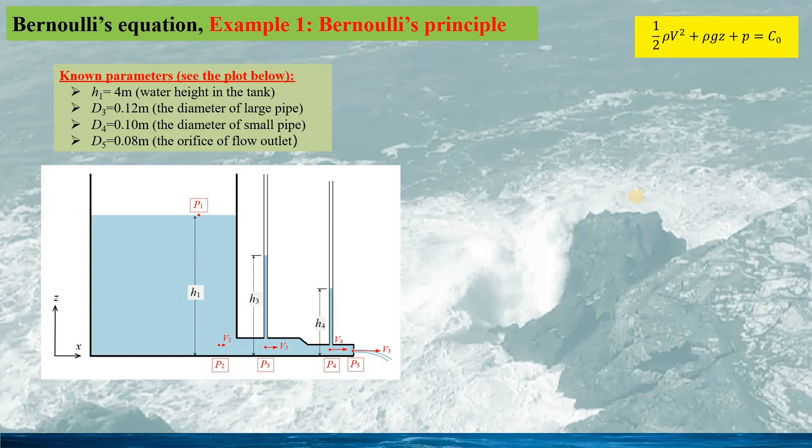Now we look at the first example. This example is very similar to the drawing Bernoulli himself drew, but here we use two pipes of different sizes. Here we take an example: the water height in the tank H1 is 4m, the diameter of the large pipe D3 is 0.12m, the small pipe 0.1m in diameter, and the orifice has a diameter of 0.08m.